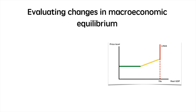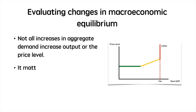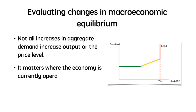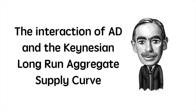Three key evaluation points before we finish. First, depending on where we start, increases or decreases in aggregate demand will impact the economy differently. Also, we must always remember the size of the change and bear in mind the multiplier effect. That wraps up this video on the interaction of AD and the Keynesian LRAS. If you have any questions, leave them in the comments below, email me at enhancetuition@gmail.com, or tweet me at enhancetuition. After this video, we move on to inflation. I will see you in the next one.